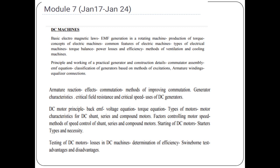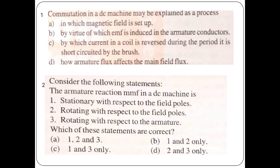Commutation in a DC machine — the process by which the manatee field is set up, by virtue of which EMF is induced in the armature conductors, by which the current coil is reversed during the period it is short-circuited by the brush, and how armature flux affects the main field flux. That is commutation in a DC machine. The answer is option C.